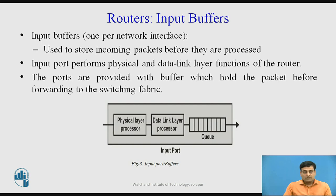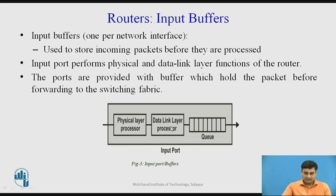The second part of a router is the input buffers, provided one per network interface. These input buffers are used to store incoming packets before they are processed. The input port performs physical and data link layer functions of the router. As shown in figure 3, when a packet arrives it is processed by a physical layer processor, then a data link layer processor, and is queued in the buffer. This queue holds the packet before forwarding it to the switching fabric.